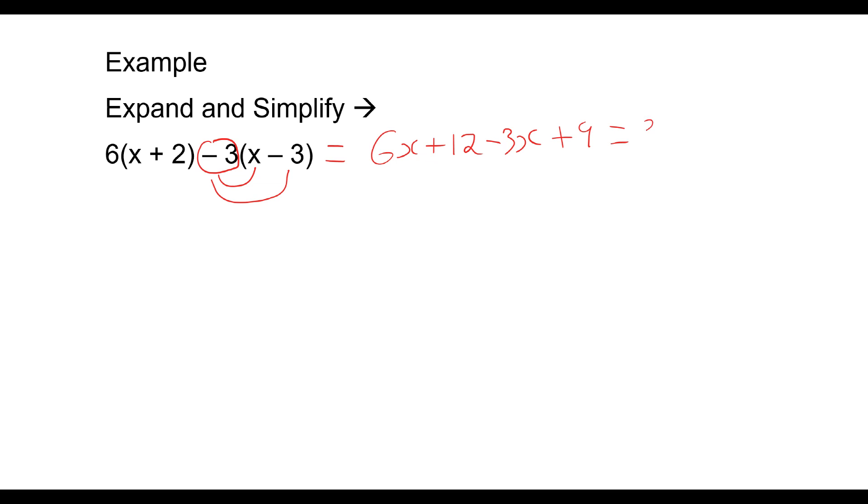6X take away 3X is 3X. 12 plus 9 is going to be 21. So I have 3X plus 21.